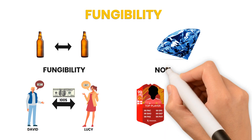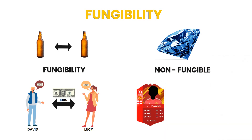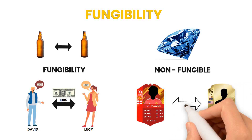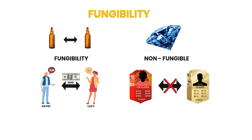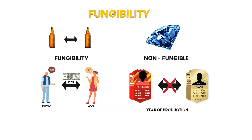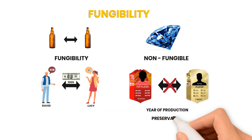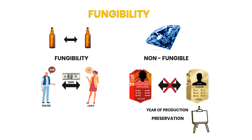On the other hand, David's favorite limited edition football card is a good example of something non-fungible. Each card is treated as a collectible and has individual properties. A card with one player doesn't usually have the same value as a card with another player. Even when considering two exactly the same cards, other factors such as the year of production or how the card is preserved can make a difference. An extreme example of something non-fungible is a piece of art.